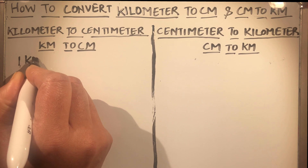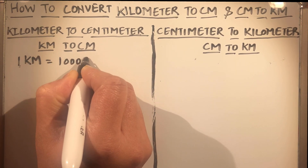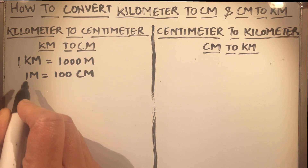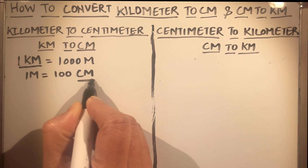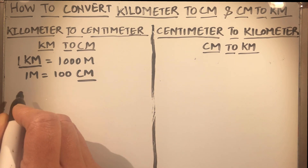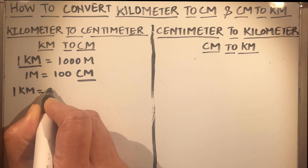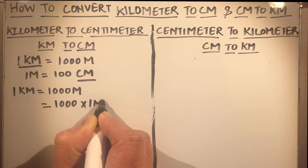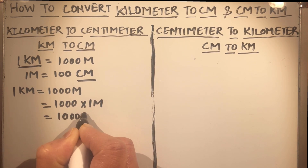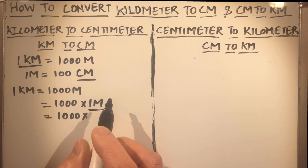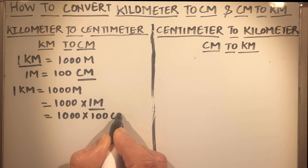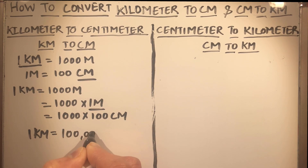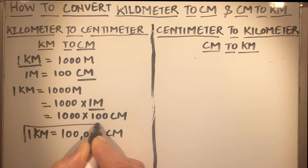We know that one kilometer is one thousand meters, and one meter is one hundred centimeters. To find the relation between kilometers and centimeters, we replace meters in terms of centimeters. So one kilometer equals one thousand times one meter, which is one thousand times one hundred centimeters.